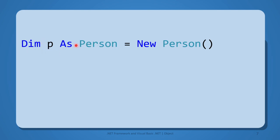Dim p as Person. Here, p is the object variable name and Person is the type of this variable.